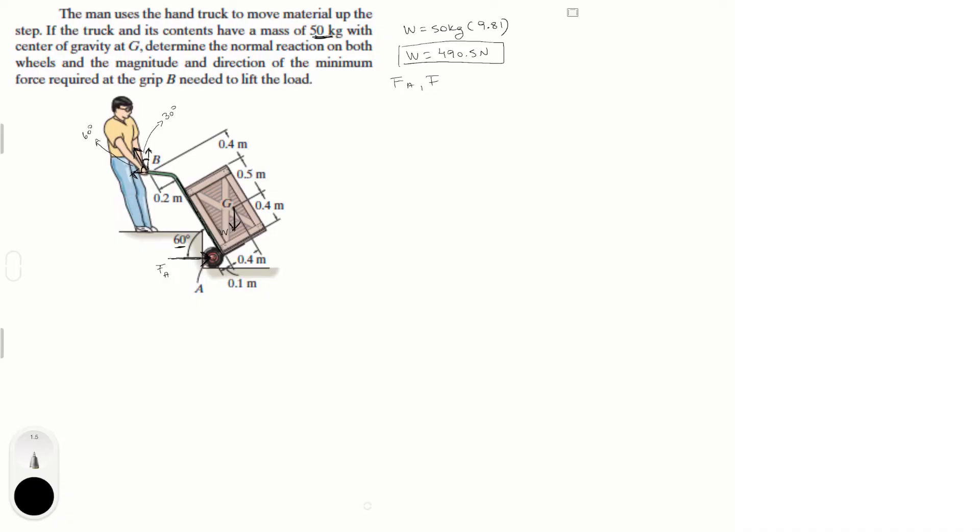We're trying to find F_A and F. Let's do the sum of the forces in the Y direction first — it's equal to zero. We'll call the components F_By and F_Bx. F_By is going up and the weight is going straight down with no other vertical force, so F_By equals the weight. Therefore F_By equals 490.5 Newtons. We got one already right off the bat.